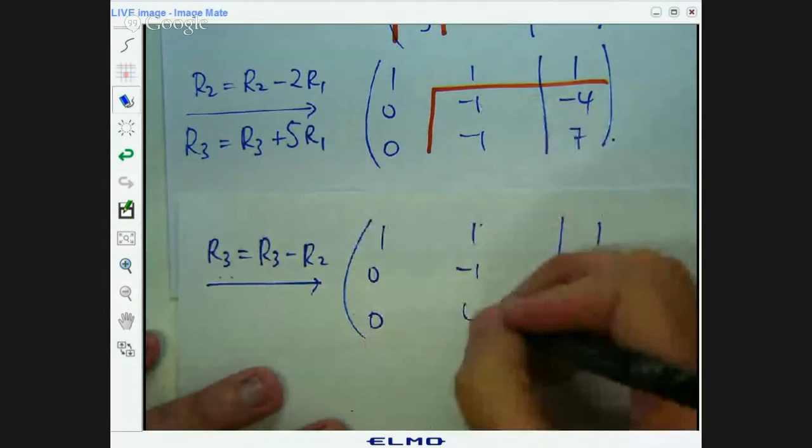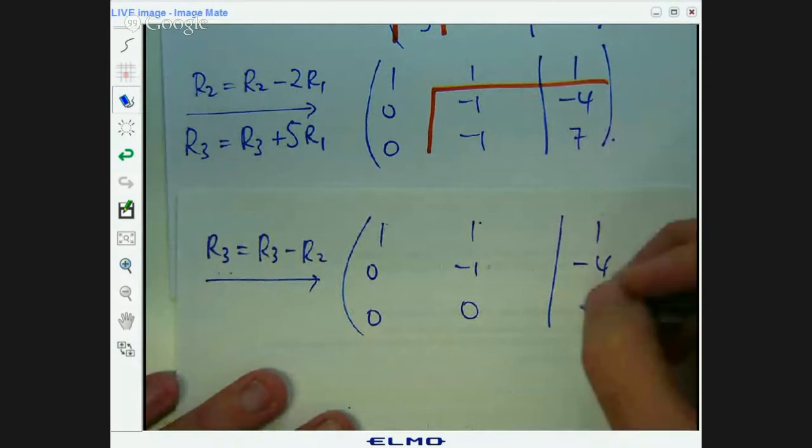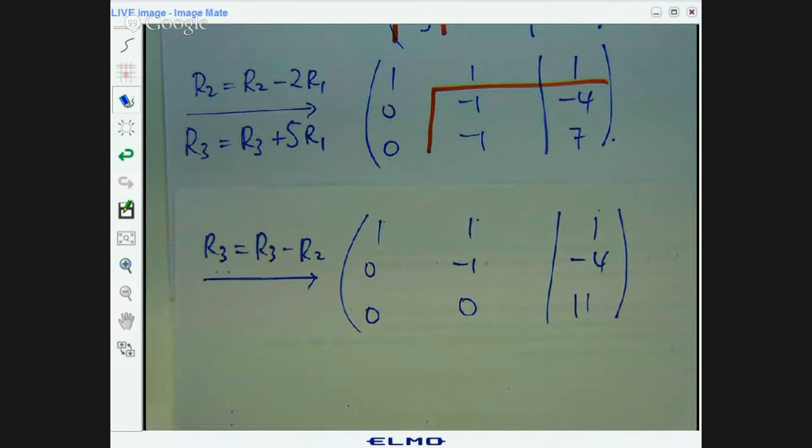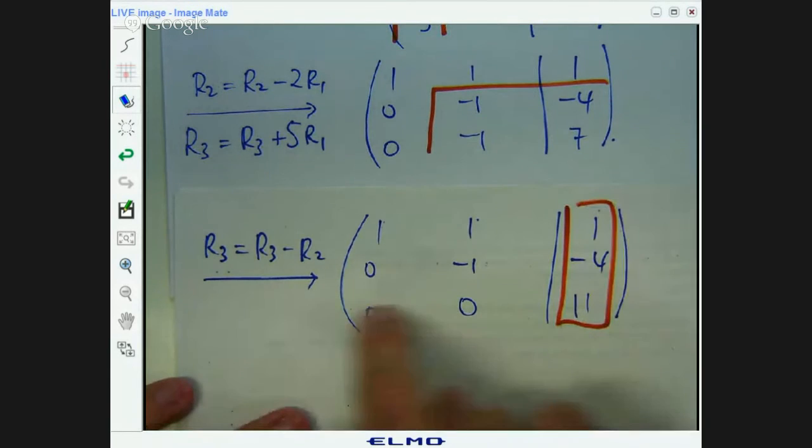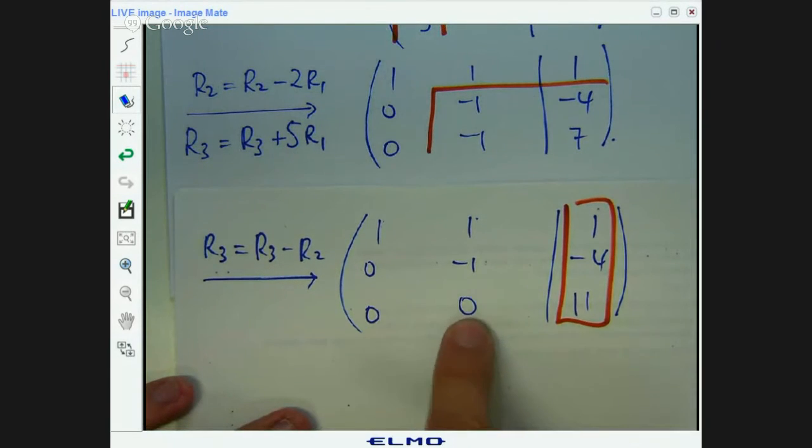Row three equals row three minus row two. It's going to be zero. I'm going to get seven minus negative four, which is 11. Now we can see, uh-oh. Basically, this bottom row says zero lambda plus zero mu equals 11. You can't have that happening.